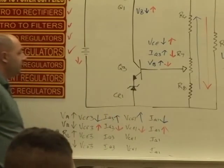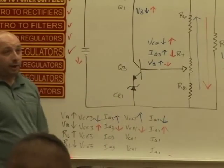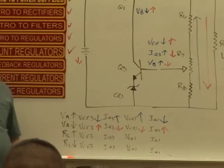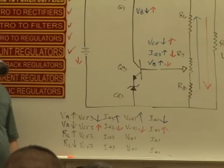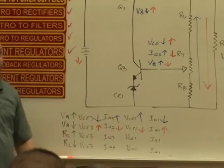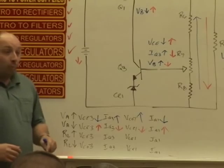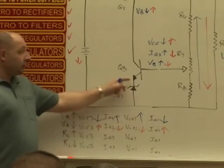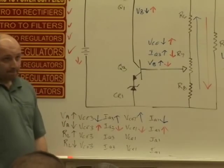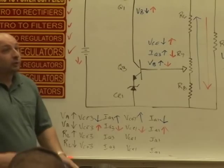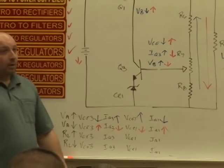Increase, increase on the base of Q3 is going to cause Q3 to do what? Just Bragg. It's an NPN transistor. I'm putting a larger potential on the base, P-type material, more potential going to cause that transistor to do what? Okay, cause what to increase?